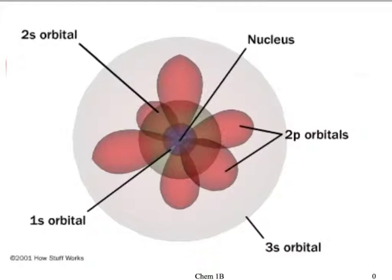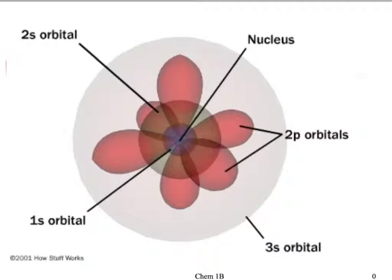Here is one orbital — this is a sphere-looking orbital. Here's another orbital inside that, also a sphere. And then you have these little bulbs here that some science books call dumbbell-looking things, though I'm not sure I agree they look like dumbbells.